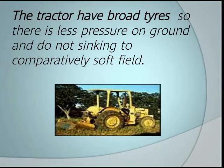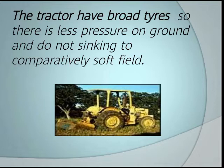Tractors have broad tires so there is less pressure on the ground, and they do not sink into comparatively soft fields. Small vehicles have smaller tires that can sink into soft ground. Because the tractor's tire is big, the area is more; more area means less pressure, so the tractor does not sink.